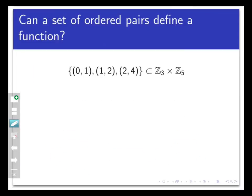So look at the following set of ordered pairs in Z3 cross Z5. Just the set {(0,1), (1,2), (2,4)}. Now this set was not given to us as a function first. It's just a random set of three ordered pairs. But we could possibly make a function out of it by thinking of it like a table.